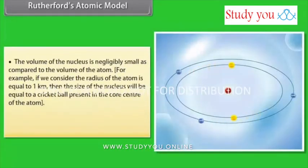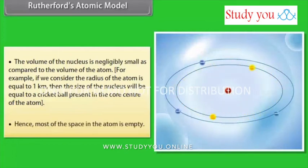The volume of the nucleus is negligibly small as compared to the volume of the atom. For example, if we consider the radius of the atom is equal to 1 km, then the size of the nucleus will be equal to a cricket ball present in the core center of the atom. Hence, most of the space in the atom is empty.